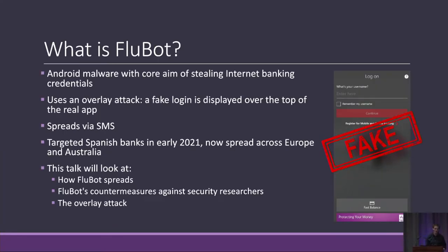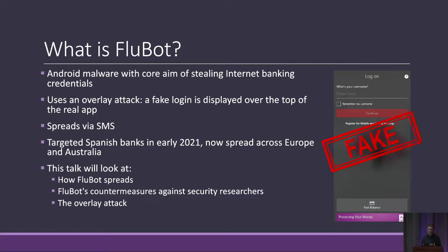Flubot is some Android malware, and its core purpose is to steal your banking details and, hence, steal your money. It does this through a fairly common Android attack called an overlay attack, whereby a fake login screen is displayed over the top of a real app. It spreads via text messages, and it first appeared in Spain in early 2021. Countries across Europe have been affected, and more recently towards Australia and New Zealand as well.